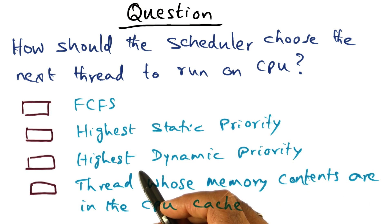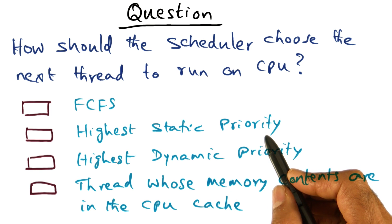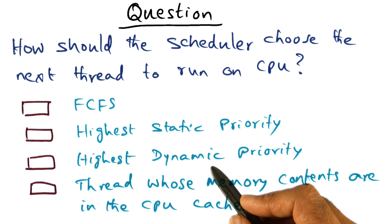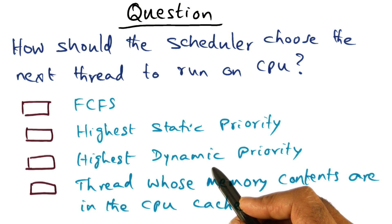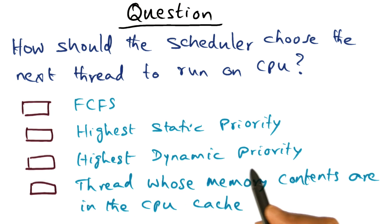The third possibility is that the priority is not static, but it is dynamic — in other words, it changes over time. And so what the scheduler is going to do is pick the one that has the highest dynamic priority.